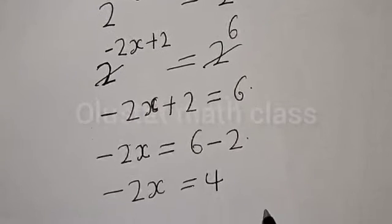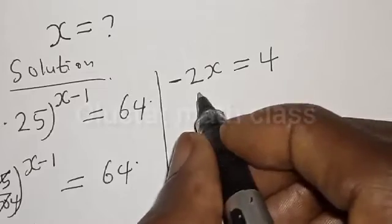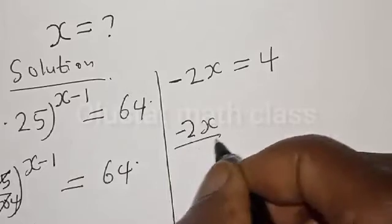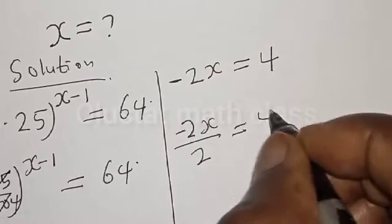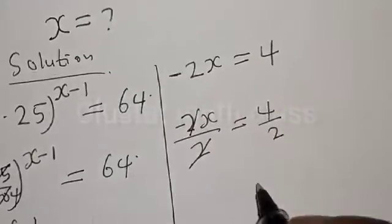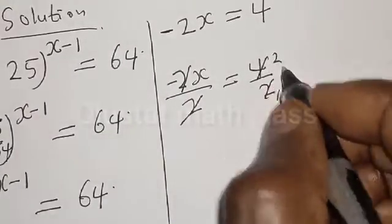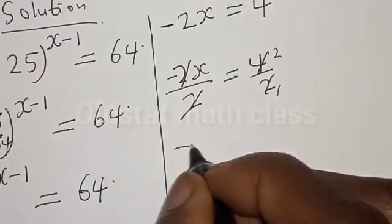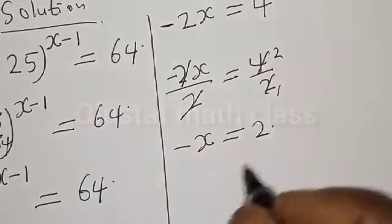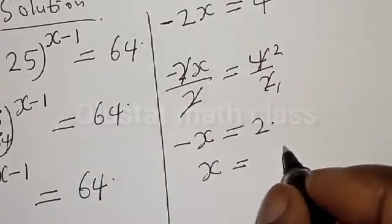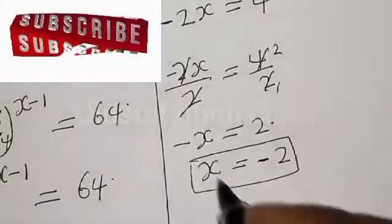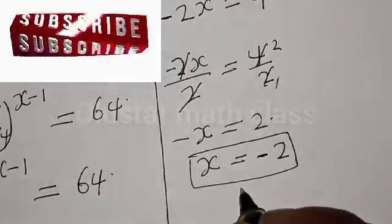Then minus 2s is equal to 6 minus 2, which gives minus 2s is equal to 4. Dividing both sides by minus 2: minus 2s divided by minus 2 equals 4 divided by minus 2. Therefore s is equal to minus 2. That is the value of s.